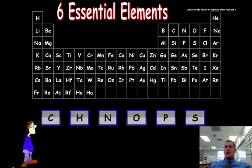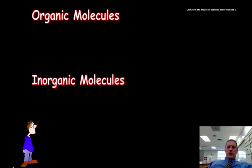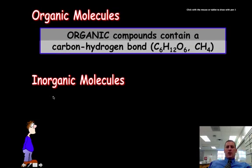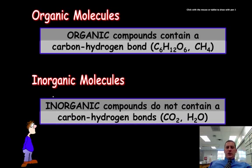So those are your six essential elements that you need to carry on all your living functions. So let's talk about what an organic molecule is and what an inorganic molecule is. There's very little difference, except for organic molecules contain a carbon-hydrogen bond. So they're going to have carbon and they're going to have hydrogen. They can have other stuff, but they've got to at least have a carbon and a hydrogen. While your inorganic molecules do not contain a carbon-hydrogen bond.